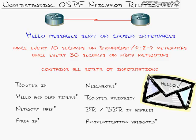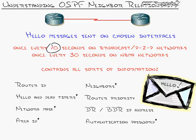In OSPF, hello messages are sent once every 10 seconds on broadcast or point-to-point networks, and once every 30 seconds on non-broadcast multi-access networks such as frame relay. The more often you send hello messages, the sooner you will know if a neighbor is down — they'll stop responding, and you can switch to a backup route faster. Many people in the OSPF world tune the hello timer down to one or two seconds to detect failures extremely fast.